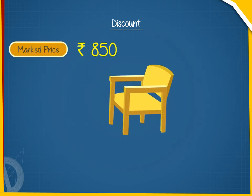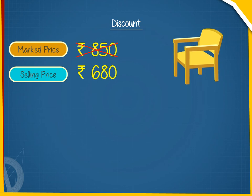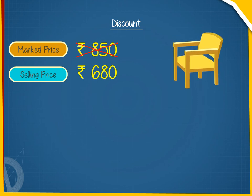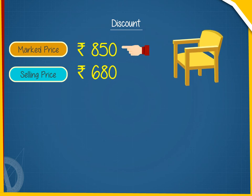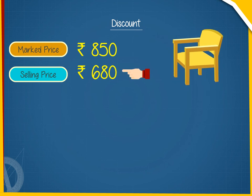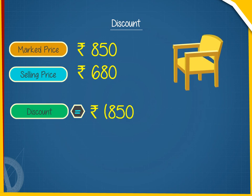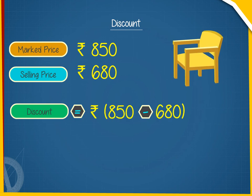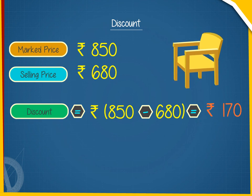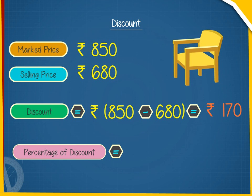Let us consider a problem. A chair marked at Rs. 850 is available for Rs. 680. What is the amount of discount and percentage of discount? Marked price equals Rs. 850, selling price equals Rs. 680. Therefore, discount equals Rs. 850 minus 680 equals Rs. 170.